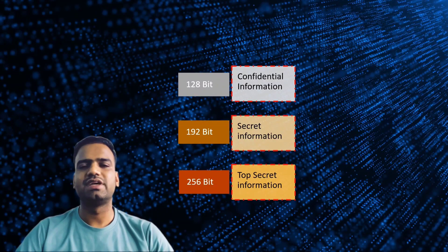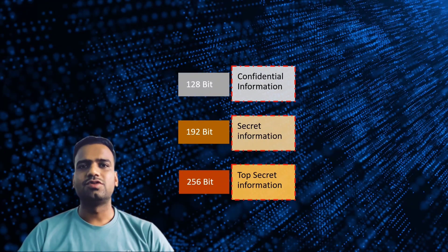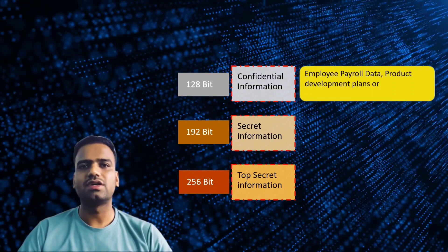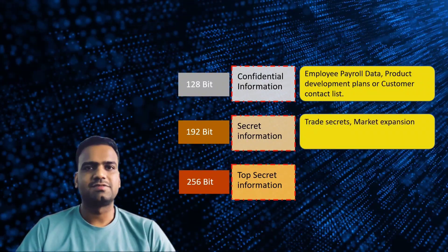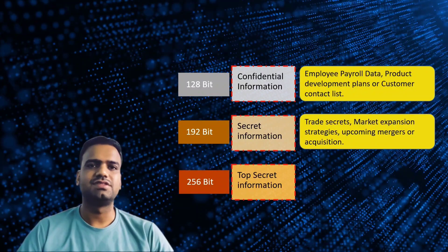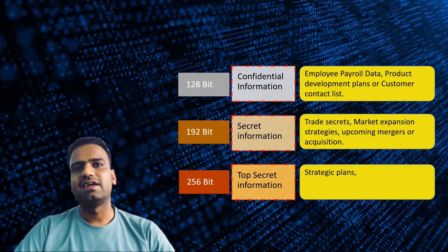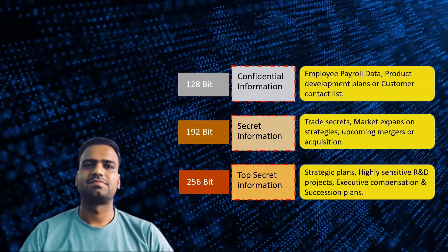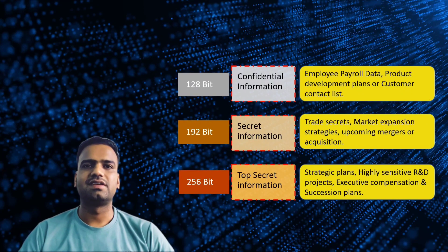Any organization is free to choose their encryption key length as per their needs. Confidential information can include employee payroll data, product development plans, or customer contact lists. Secret information includes trade secrets, market expansion strategies, and upcoming mergers and acquisitions. Top secret information includes strategic plans, highly sensitive R&D projects, or executive compensation and succession plans. The level of security needed for the data determines the encryption key length.